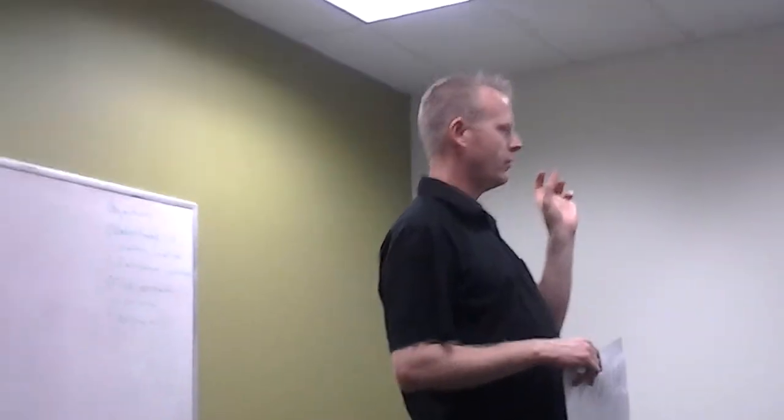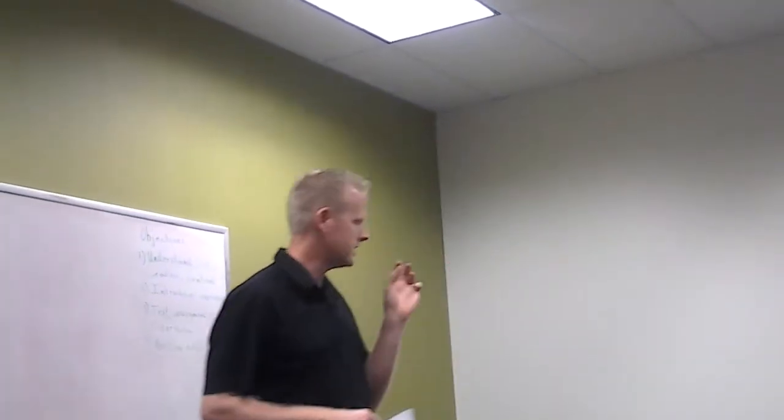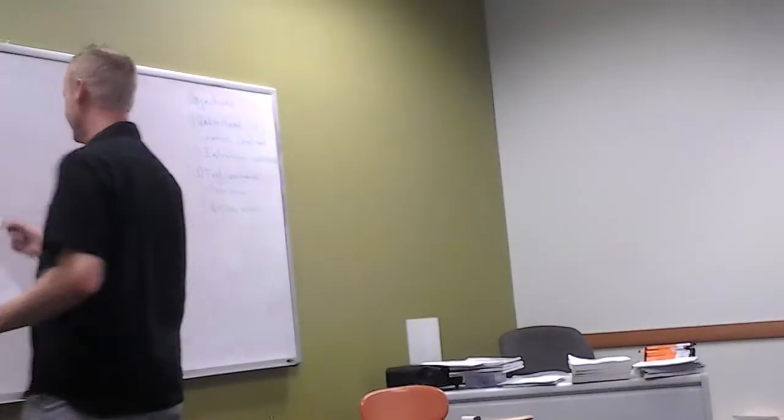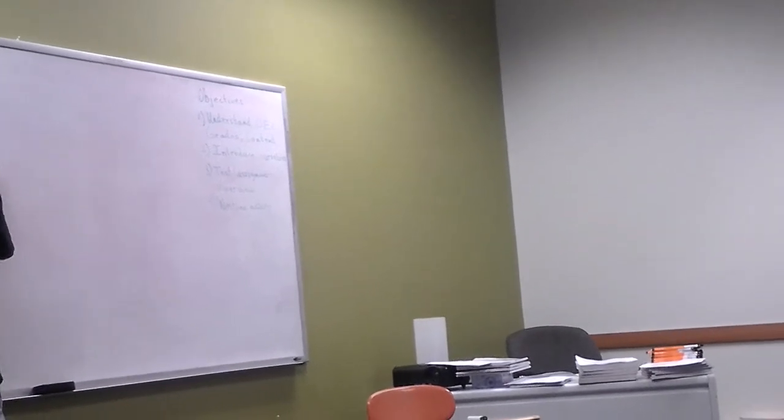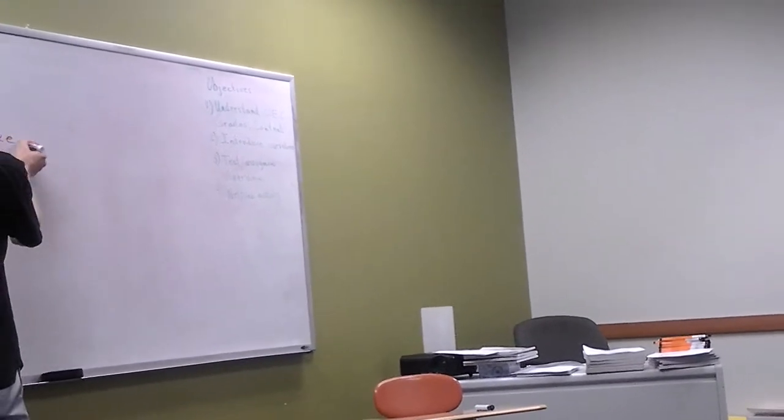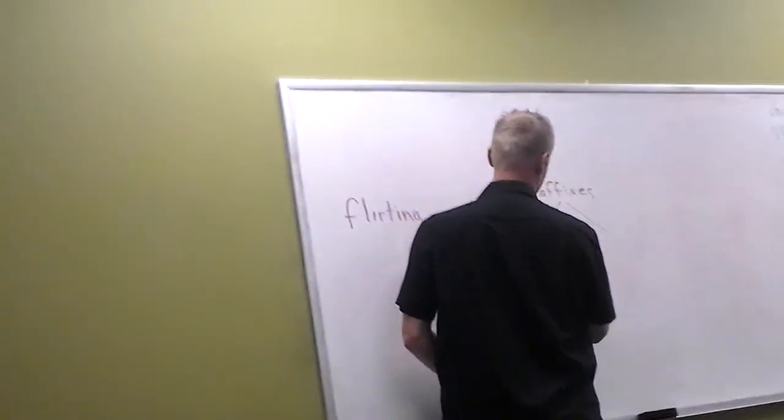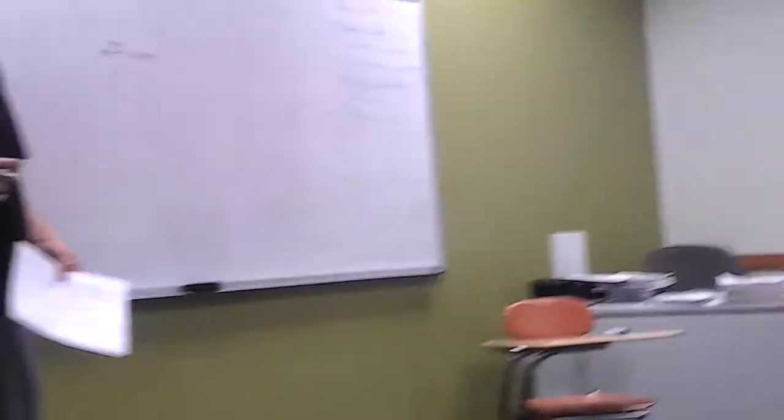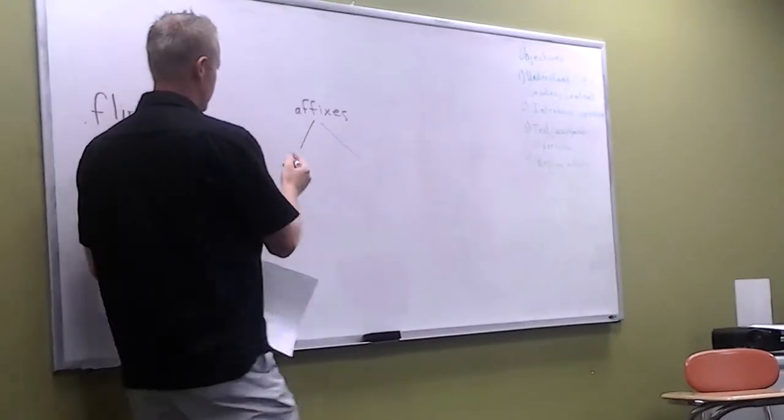Word forms. We have in English a stem, which is the main word. And then we have prefixes and suffixes, which are called together affixes. There are endings and beginnings that we attach to stems, or the main word.